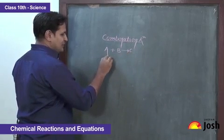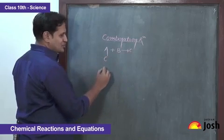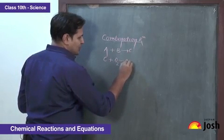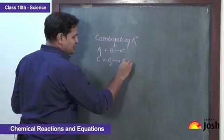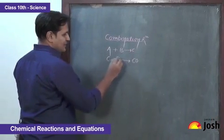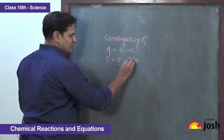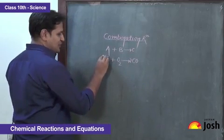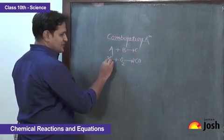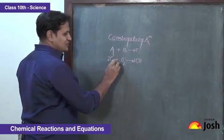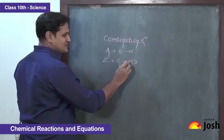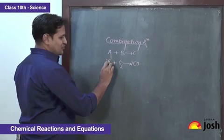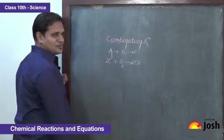For example, we have the reaction of carbon (coke) with oxygen to form carbon monoxide as the product. We balance it — we have two atoms of oxygen and two atoms of carbon. In this case, element carbon combines with element oxygen to form a single compound as the product. So we have the combination of two simple elements giving a single compound.